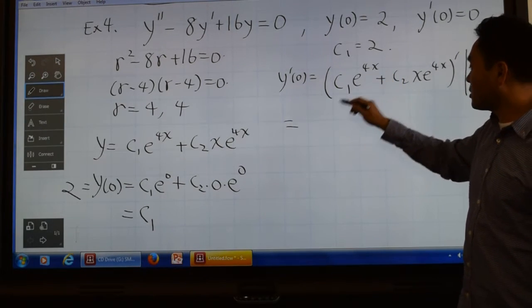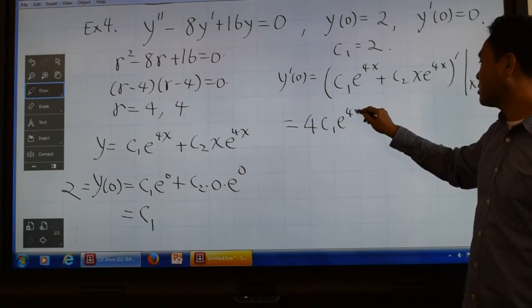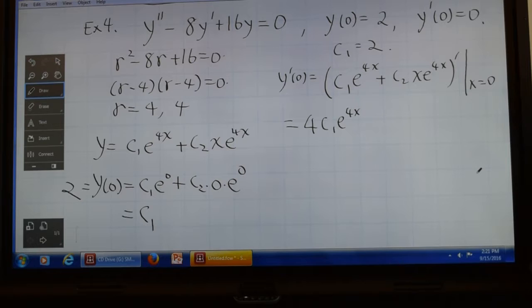Now differentiating this will bring down the 4, so you're going to have 4c1 e to the 4x. However, differentiating this, because it's a function of x times another function of x, you have to use the product rule.